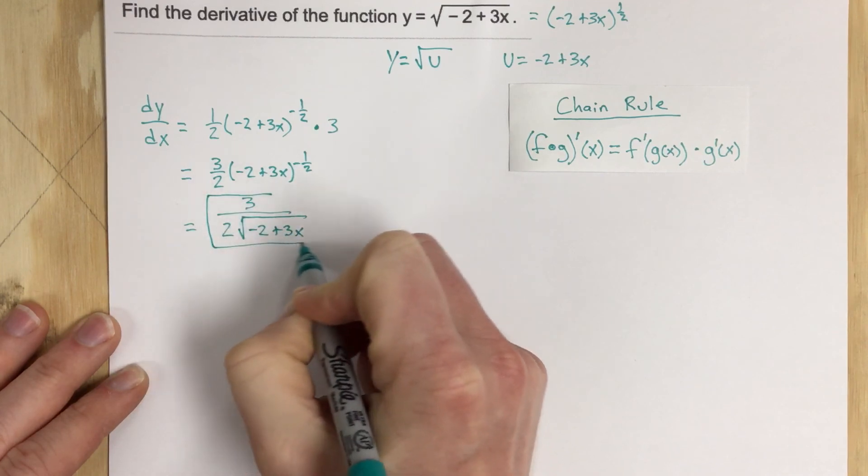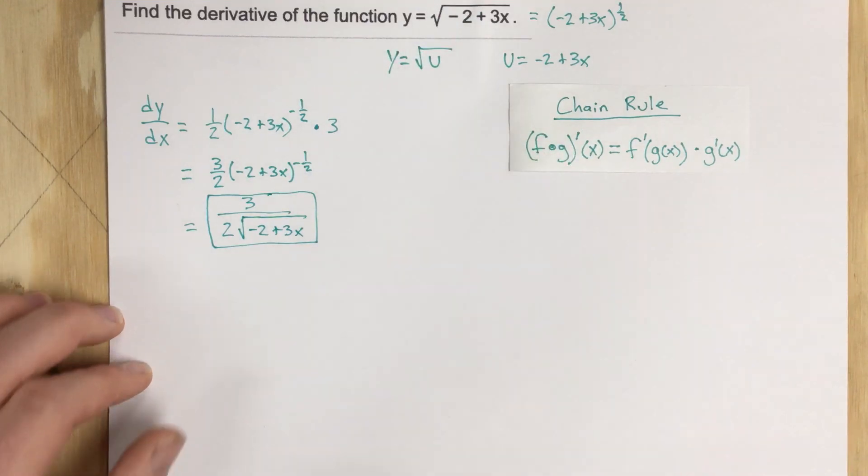So this is the derivative using the chain rule for the original function y equals root negative 2 plus 3x.